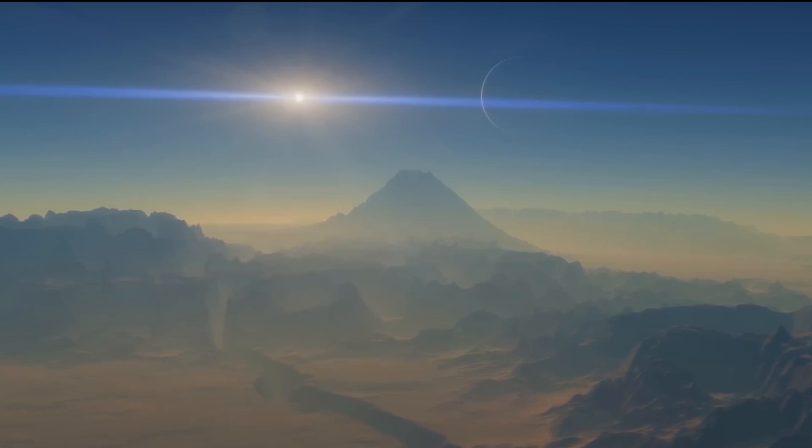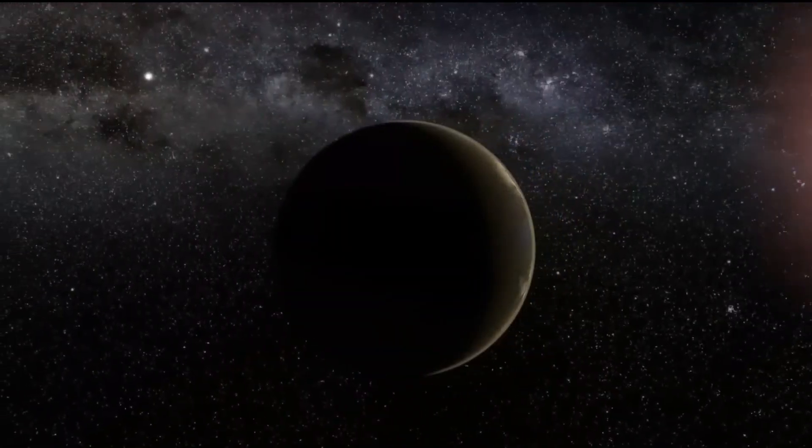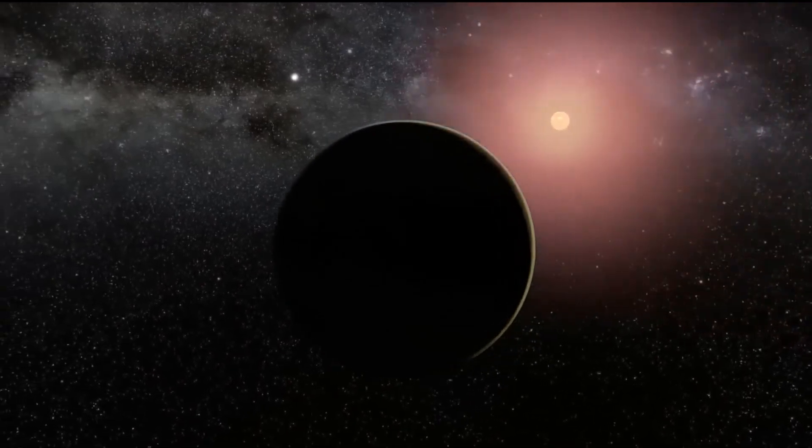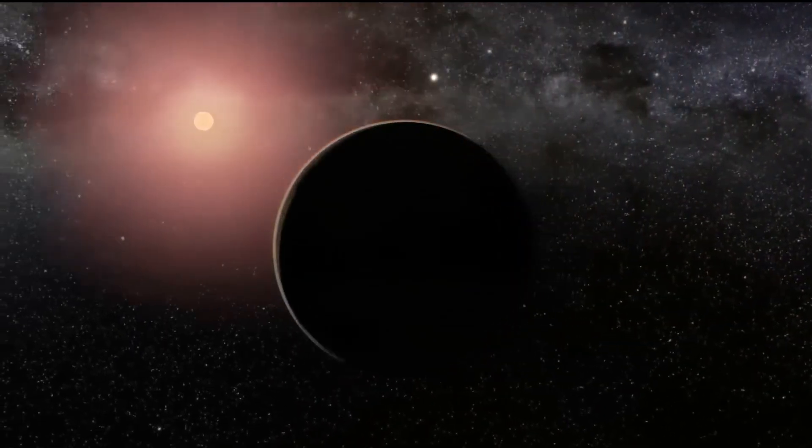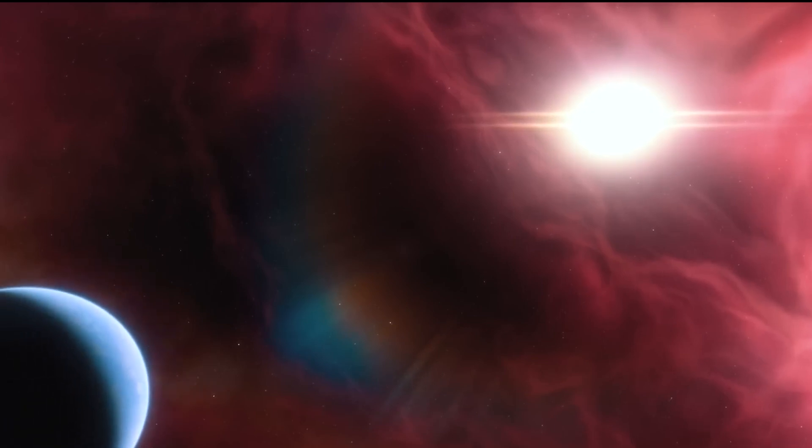Proxima b cannot be seen by looking directly at Proxima Centauri, as it does not transit in front of it, making it difficult to determine its orbit. No one knows whether Proxima b's orbit is circular or highly elliptical.